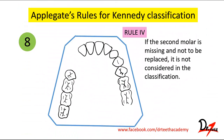Rule four: if the second molar is missing and not to be replaced, it is not considered in the classification. Here you can see the second molar is missing and you do not have to replace it, so don't consider it. Consider all other areas — in this example the remaining space is Class III.